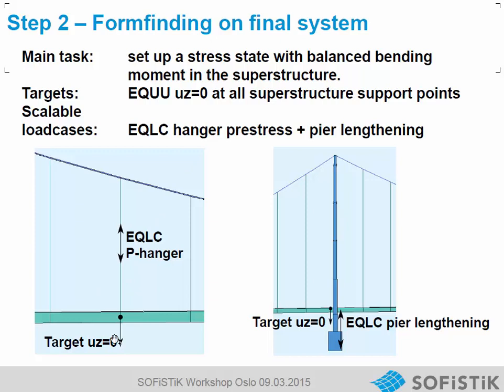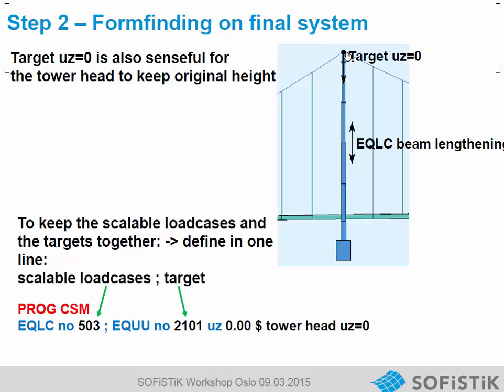Now we want to make an optimization on the final system, as in the little example in the other video. If we want to get a target for Uset for one node on the superstructure, we can use the pre-stress or shortening of the hanger in the best way. At the pier we also want a good Uset result, so we can give a lengthening to the pier at the bottom. At the top of the pier we really want Uset equals zero — the architectural shape shall be at traffic opening. We can give a lengthening on this beam to reach this target, because the normal force of the cable will shorten the pier.